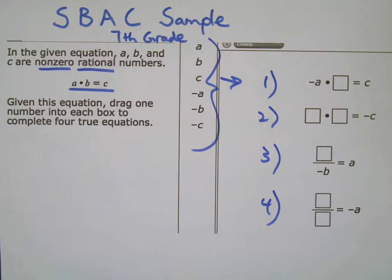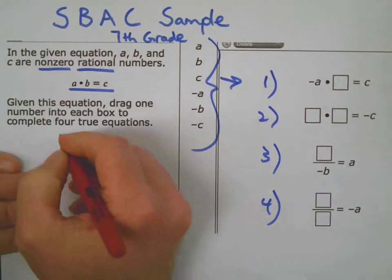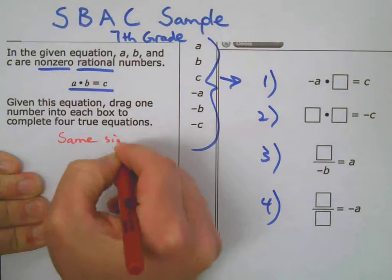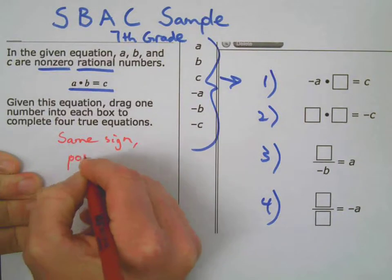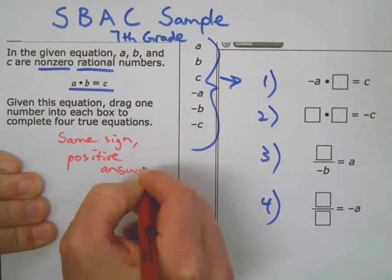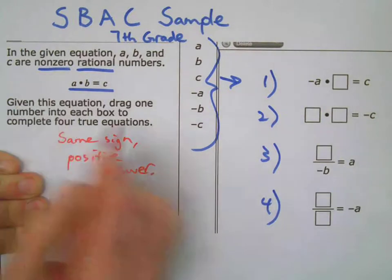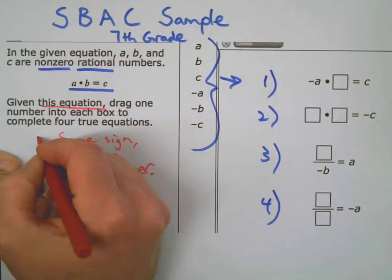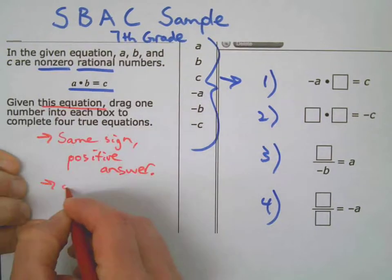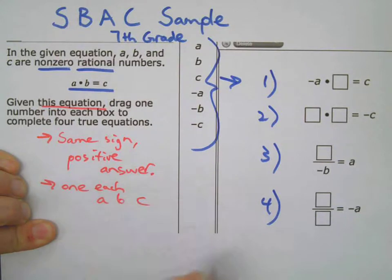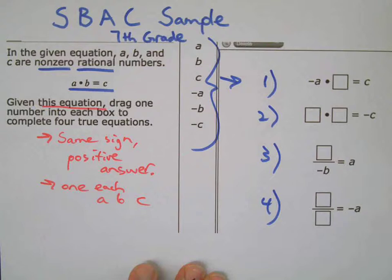Well, let's remember the one rule that I've taught in class which is same sign, positive answer. That's the only rule you need to remember. And for this equation, this particular one, we need to have one each, A, B, and C in each equation.